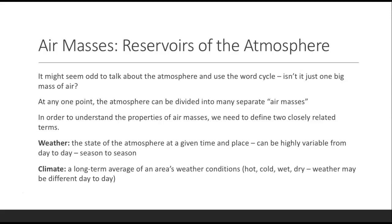Weather and climate. Weather is the state of the atmosphere at a given time and place. It could be highly variable from day to day and especially season to season. Climate is a place's long-term average of that area's weather conditions. An area could be hot, cold, wet, or dry, but the weather could be different from day to day.